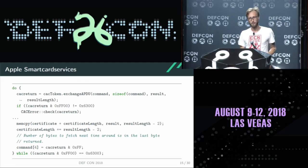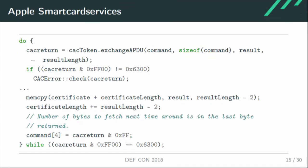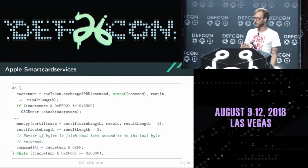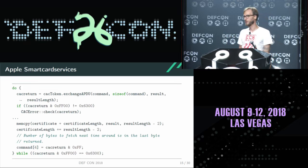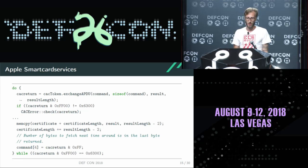What kind of bugs did I find? For the Apple SmartCard Services, in one of the drivers, there's a loop that waits until the card sends its responses. If the result starts with 0x63, it says it needs to fetch more data. The loop continues until the card says it has no more data — and in each loop iteration, it retrieves data from the card and appends it to a buffer. So if the card never stops saying there's more data, it keeps copying into the buffer, resulting in a classic heap overflow.